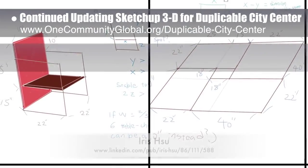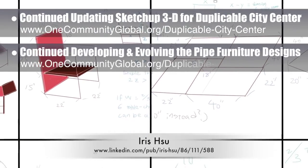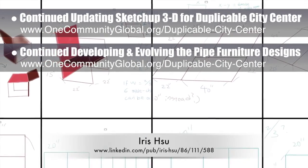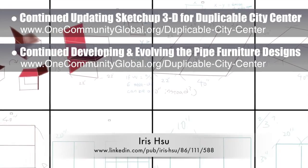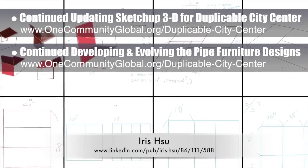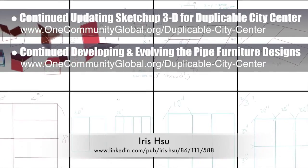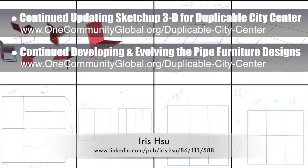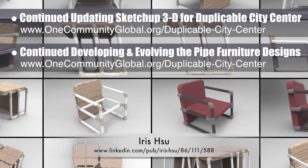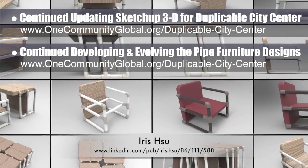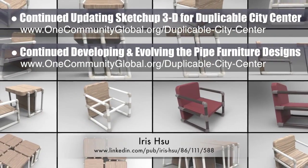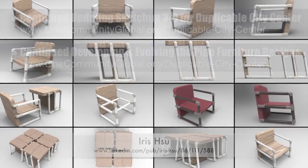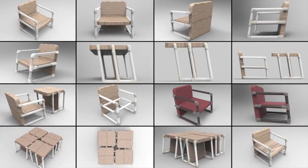Iris Hsu, industrial designer, continued developing and evolving the pipe furniture designs. What you see here are the fifth generation concept designs for the chairs for the duplicable city center library, evolving in sketches and then in renders, which show that the chairs will be able to be converted into tables and are designed to be built out of PVC or recycled plumbing piping.